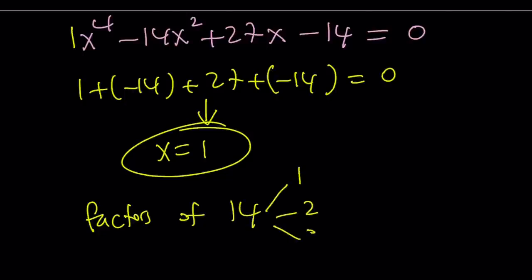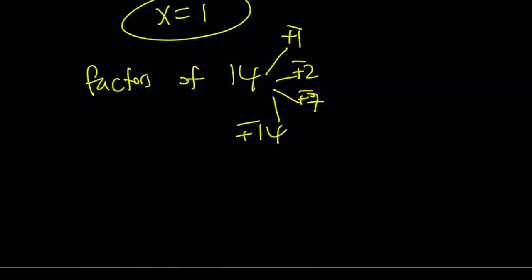So I have 1, 2, 7, and 14, and also their opposites. So those are my candidates. I have 8 candidates. 1 is a candidate. It's already a solution. And the other one, without further ado, I'm going to give it to you.